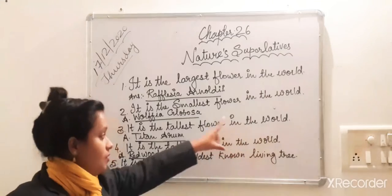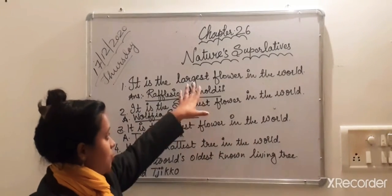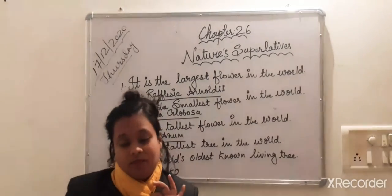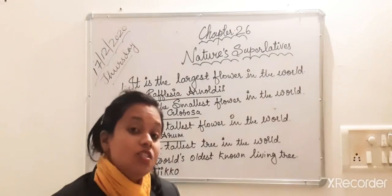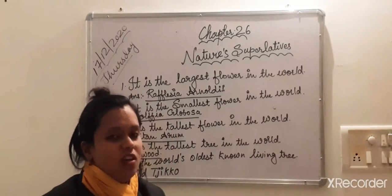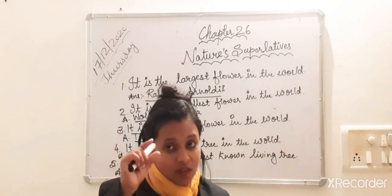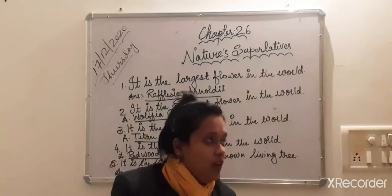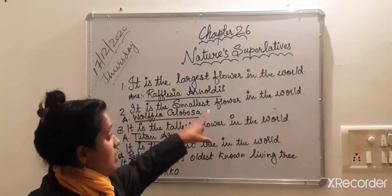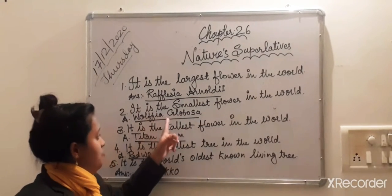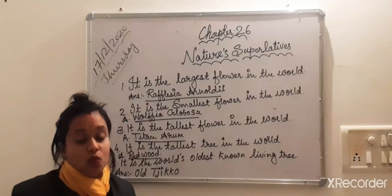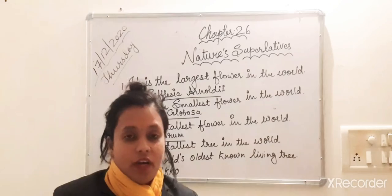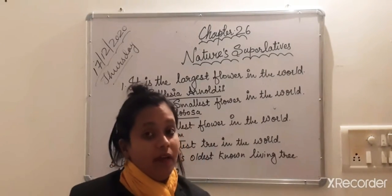Now it is the smallest flower in the world. First we talked about largest flower, now we are going to talk about the smallest flower. Smallest means how small it can be? The smallest flower in the world is Wolfia globosa.